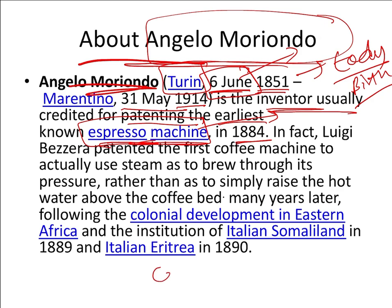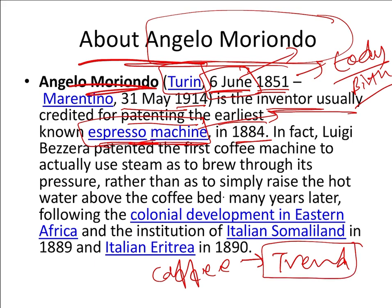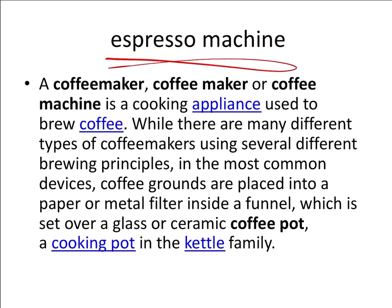At that time, coffee was trending, but it took 10 to 15 minutes to prepare a cup of coffee. So he invented the espresso machine to reduce the time of making coffee. The espresso machine is also called a coffee maker, and it is used to make coffee in just a few minutes.